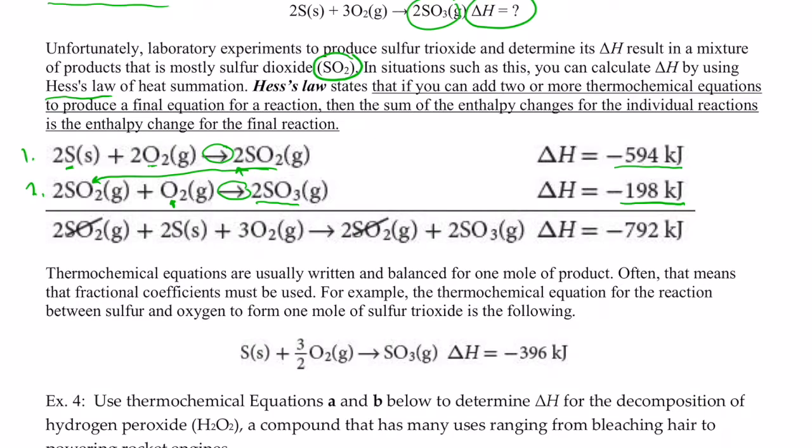So let's add these together. Here's my arrow. Don't I have two SO2s on this side? I have two S's on this side. I have two O2s here plus another O2 for a total of three O2s on the left side. On the right side, I have these two SO2s and these two SO3s right there. So I've added those together.